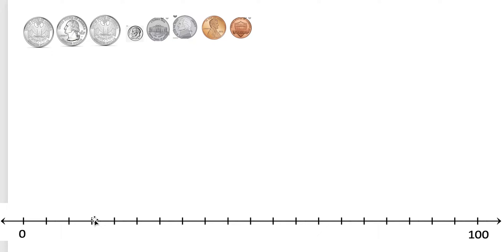So if I were to skip count by fives on this number line, it'd look like this: 5, 10, 15, 20, 25, 30, 35, 40, 45, 50, 55, 60, 65, 70, 75, 80, 85, 90, 95, 100. So each space right here represents five.